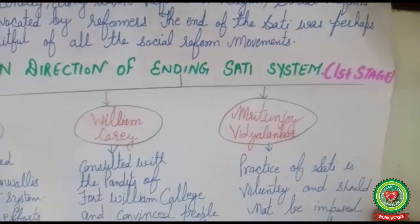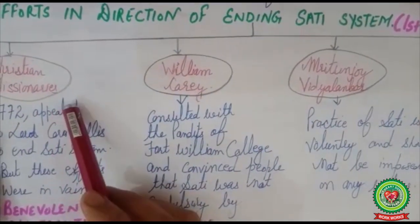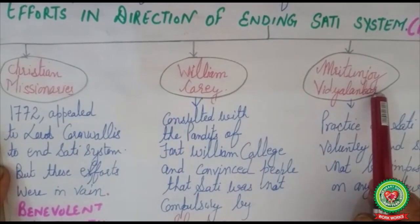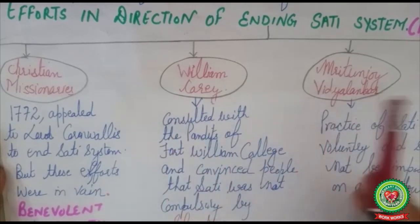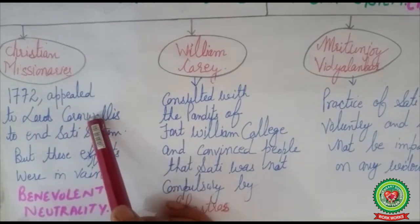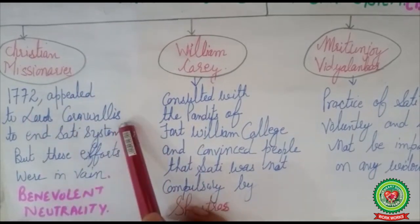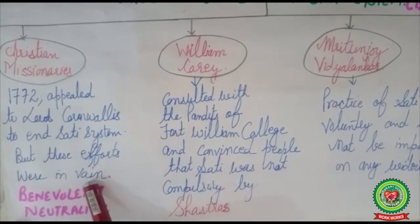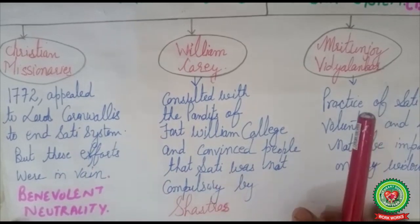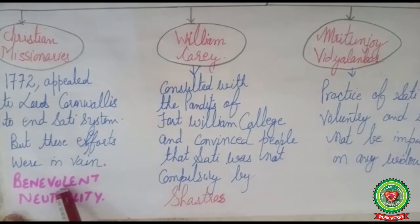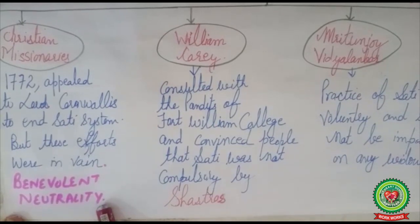In the first stage, Christian missionaries William Carey and an Indian, Mrityunji Vidi Lanka, put forward their efforts. In 1772, Christian missionaries appealed to Lord Cornwallis, who was Governor General at that time, to end the sati system. However, these efforts were in vain, as the government had adopted a policy of benevolent neutrality — meaning not to interfere in the social and cultural life of Indians.